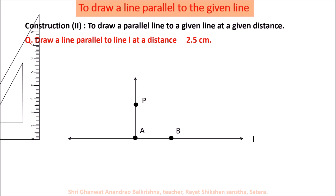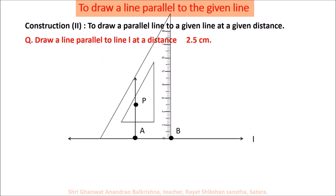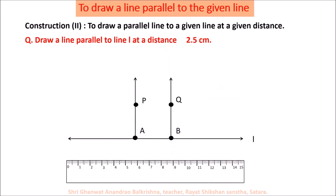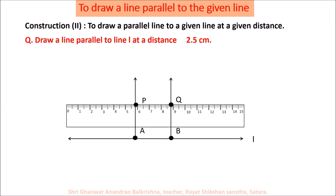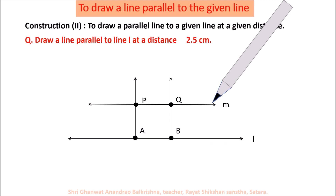Use the set square again to draw a perpendicular at point B. On this perpendicular, take point Q exactly at 2.5 cm from line L. Use the ruler to draw a line passing through points P and Q. Name this line M. Line M passes through P and Q and is exactly 2.5 cm from line L, so line M is parallel to line L at a distance of 2.5 cm.